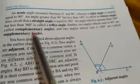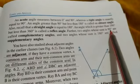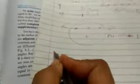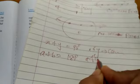Next is complementary and supplementary angles. If the sum of two angles is 90 degrees, then they are complementary. If the sum of two angles is 180 degrees, then they are supplementary. For example, if X + Y = 90°, then X and Y are complementary; if A + B = 180°, then A and B are supplementary angles.